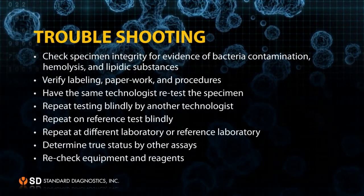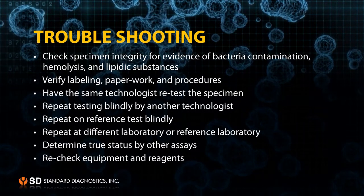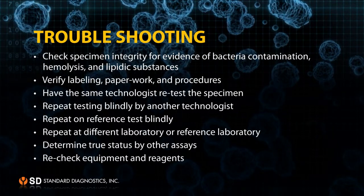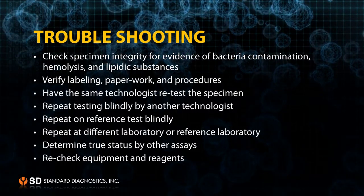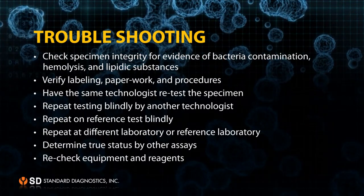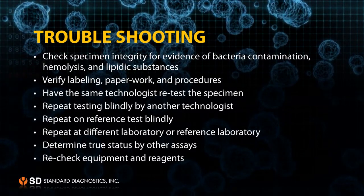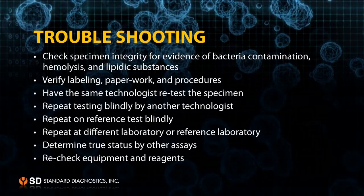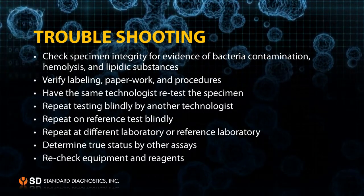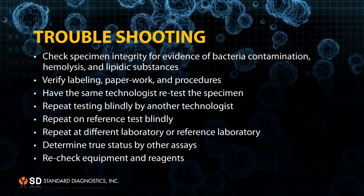When you have a problem with your test, it could be solved by the following steps: check specimen integrity for evidence of bacterial contamination, hemolysis, and lipidic substances; verify labelling, paperwork, and procedures; have the same technologist re-test the specimen; repeat testing blindly by another technologist; repeat on a reference test blindly; repeat at a different or reference laboratory; determine true status by other assays; and re-check equipment and reagents.